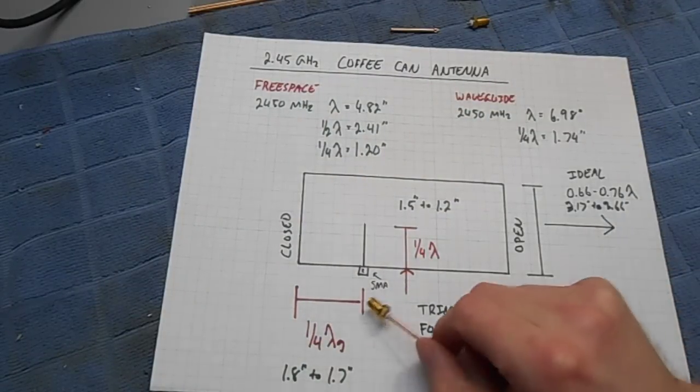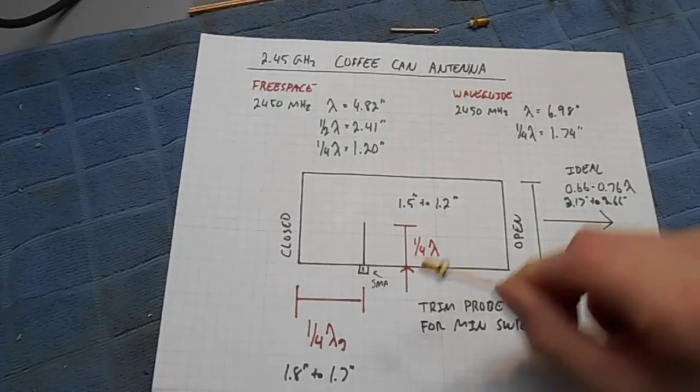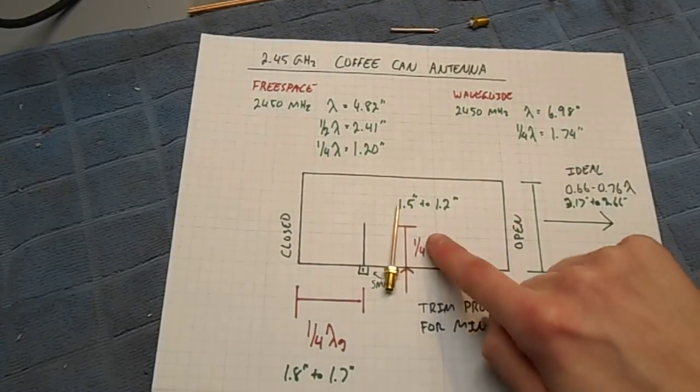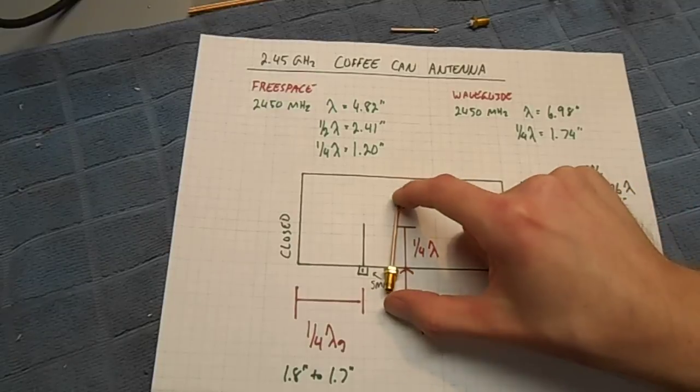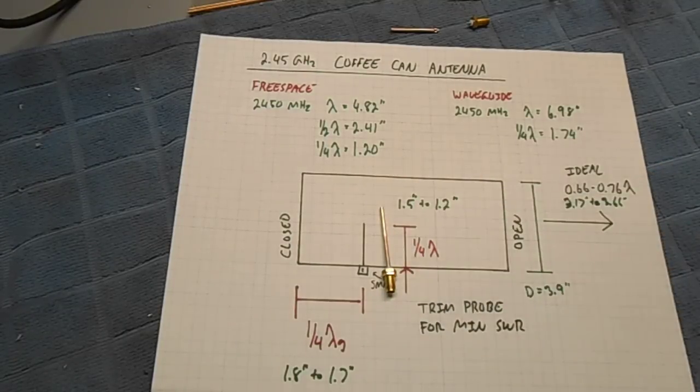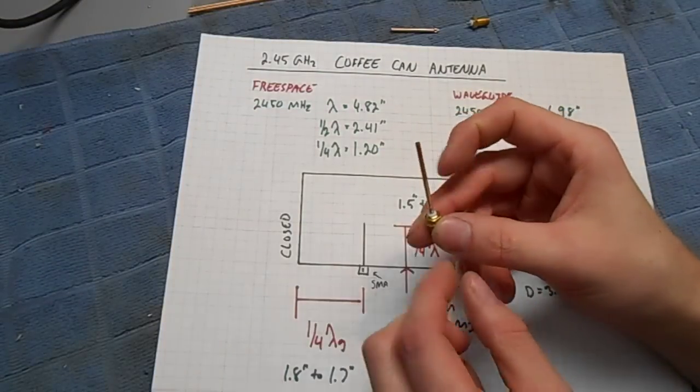The length of the probe antenna itself will be 1 quarter wavelength free space. In reality, we want to make this a little bit longer because we want to trim it down for the best SWR. So this length of the probe antenna can be 1.5 to 1.2 inches.